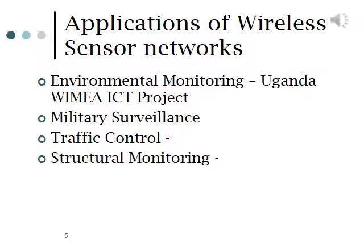Applications include environment monitoring. In Uganda, the WIMEA ICT project is a pioneer group — the first in eastern Africa and probably all of eastern and southern Africa — to use wireless sensor networks specifically for environment monitoring on a very large scale, planning to deploy about 70 automatic weather stations. Other applications include military surveillance, involving small drones flying about communicating with each other wirelessly, as well as traffic control and structural monitoring.